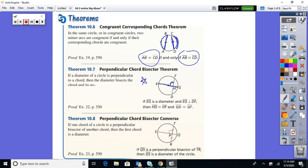When they are perpendicular, you are going to bisect the chord. So if EG is a diameter, then you know that HD is the same as HF, and also the arcs, GD is the same as GF. So that's a very powerful thing whenever you have a diameter being perpendicular to a chord.